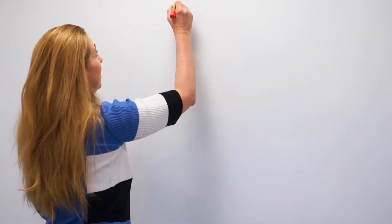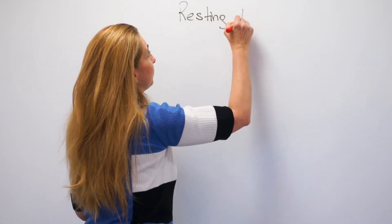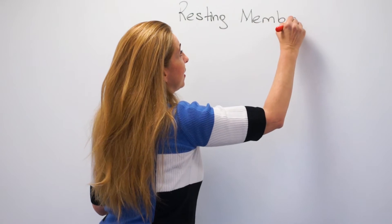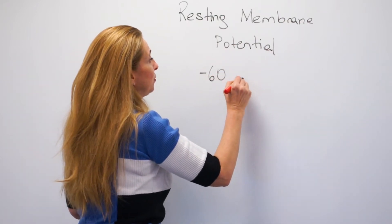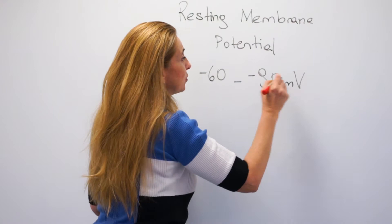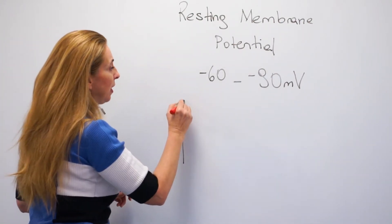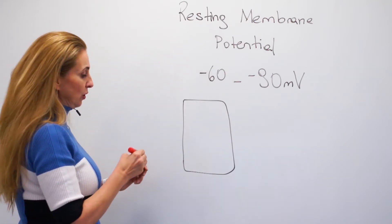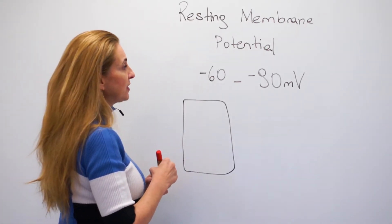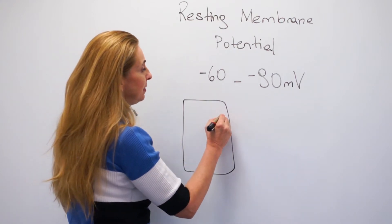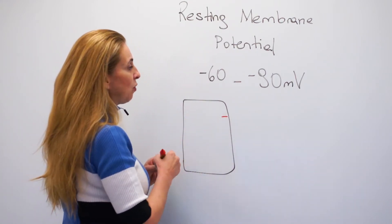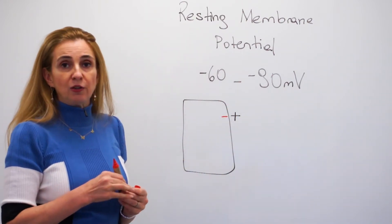We know that all cells in our body have an electrical potential difference between the two sides of the membrane, and this is called a resting membrane potential. The resting membrane potential in most cells is between minus 60 to minus 90 millivolts. When we talk about a membrane potential, we always refer to the inside of the cell membrane. So when I say a cell has a membrane potential of minus 90, I mean that the inside of the cell is 90 millivolts more negative compared to the outside.